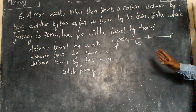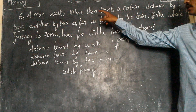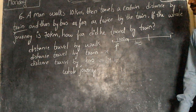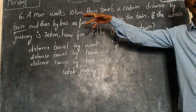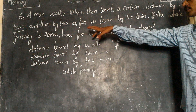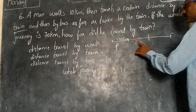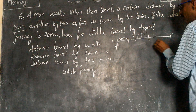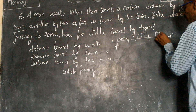Keep in mind: a man walks 10 kilometers, then travels a certain distance by train, and then by bus. First he travels by train — this is the train journey — and then this is the bus journey.